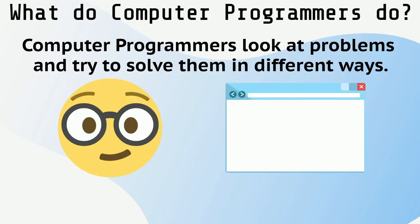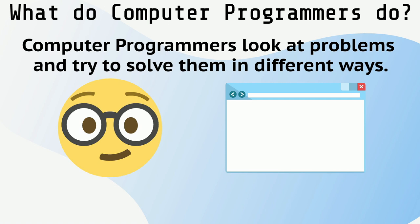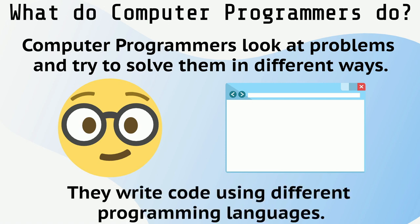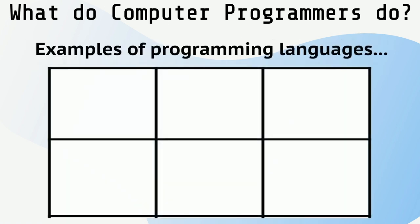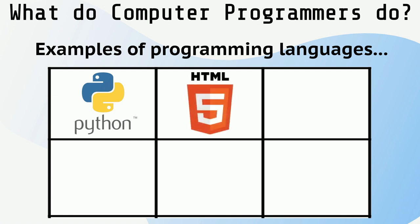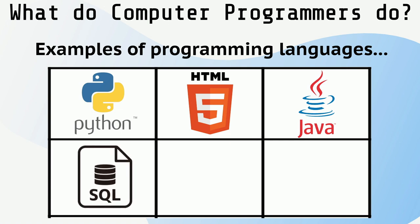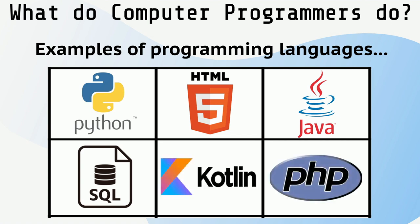Computer programmers look at problems and try to solve them in different ways. They write code using different programming languages. Examples of these programming languages are Python, HTML, JavaScript, SQL — which stands for Structured Query Language — Kotlin, and PHP.